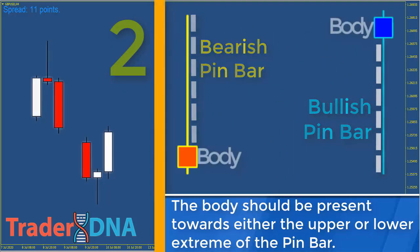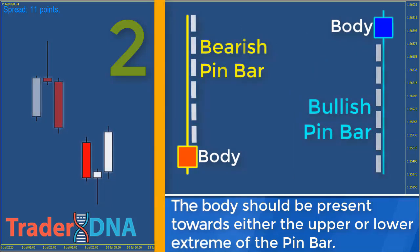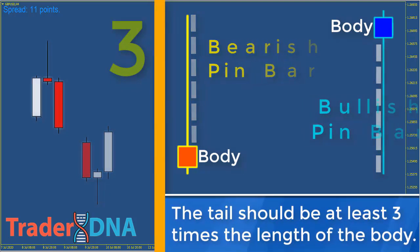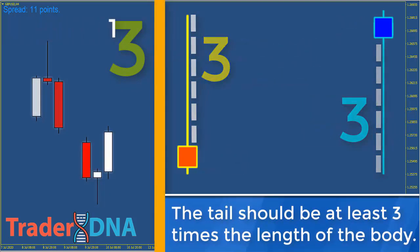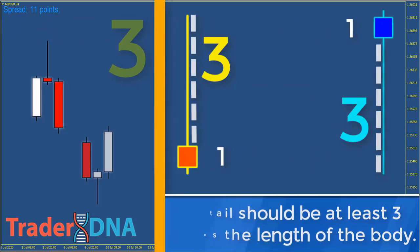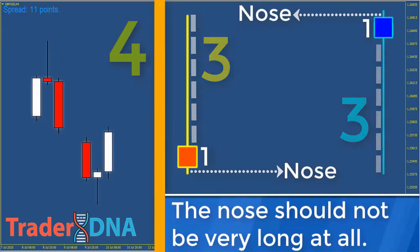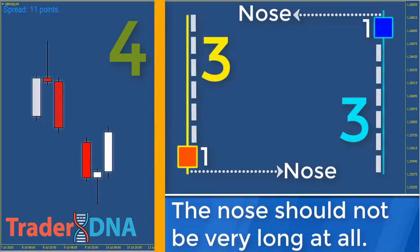The body should be present towards either the upper or lower extreme of the pin bar. Third: the tail should be at least three times the length of the body. Fourth: the nose should not be very long at all — if the nose is too long, the candlestick will form what is called a doji, which is a candlestick with a small body and equal length wicks on each side. A perfect pin bar will have a very long tail and a very small nose.